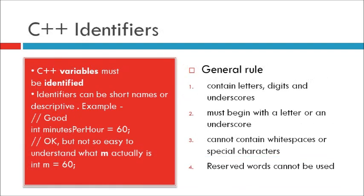C++ identifiers. All C++ variables must be identified by unique names. These unique names are called identifiers. Identifiers can be short names like X, Y, Z, ABC or more descriptive names like age, sum, total volume, etc. Note that it is recommended to use descriptive names in order to create understandable and maintainable code.